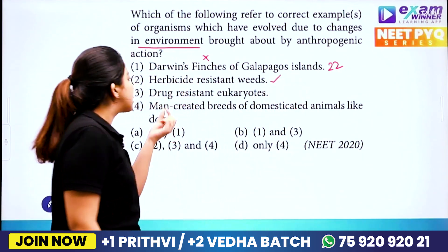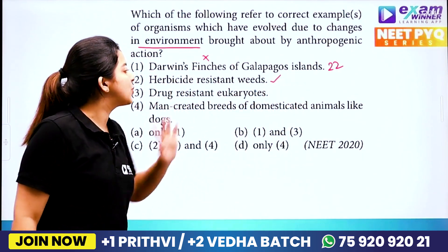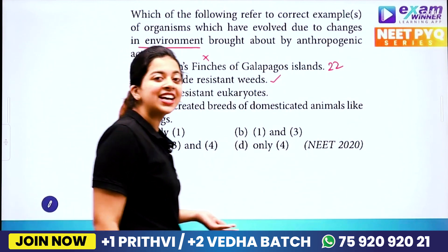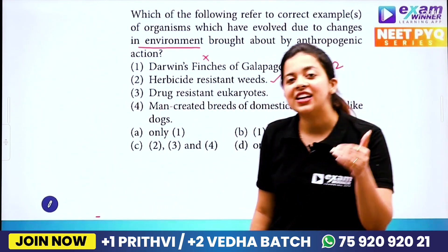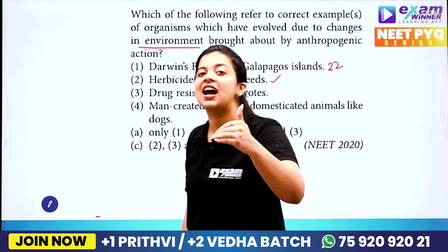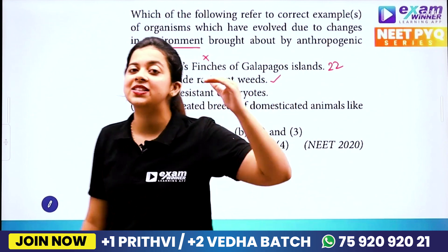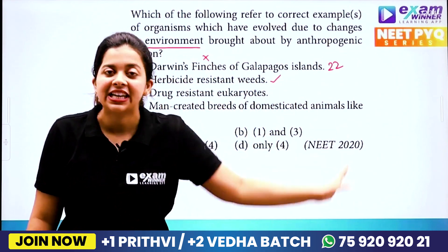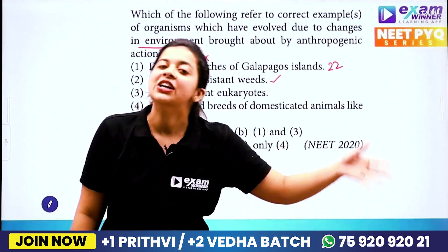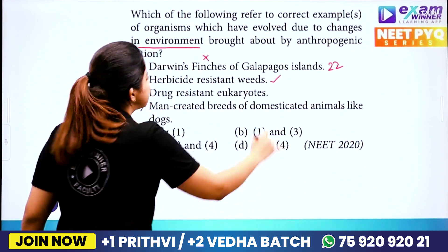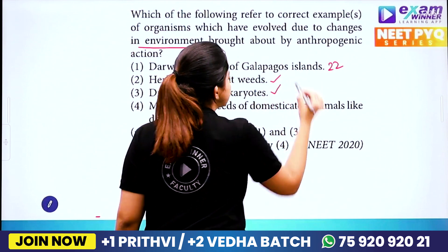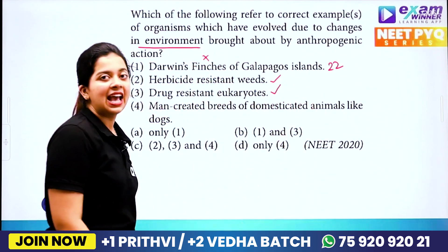Then, drug resistant eukaryotes. Drugs are because of humans. So the main reason for drug resistance in eukaryotes is because of humans. Drug resistant eukaryotes are also anthropogenic.